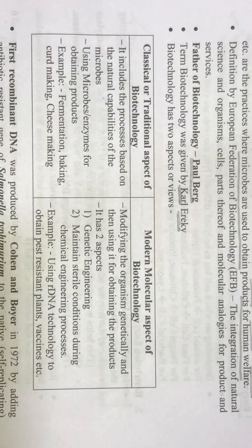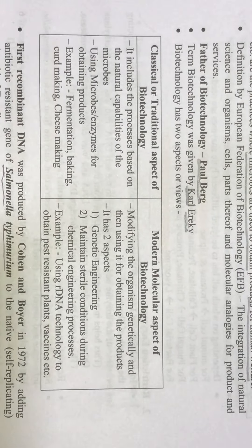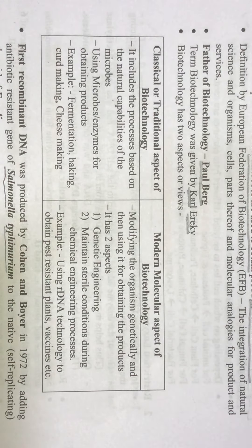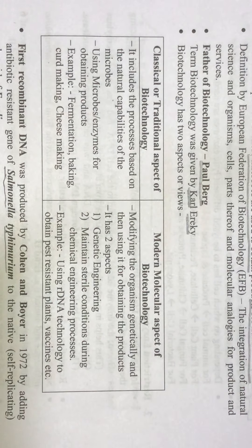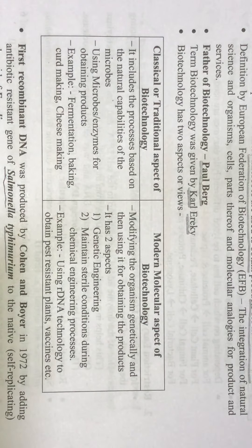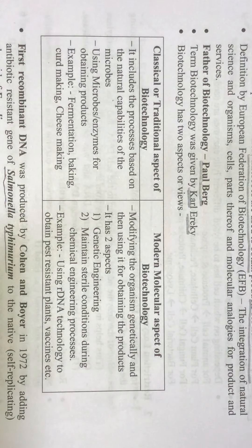Biotechnology has two aspects. One is the traditional or old concept, and the second is the modern or molecular aspect. In the traditional aspect, the process is based on the natural capability of microbes — what they do naturally, like breathing. We are not doing anything artificial. Using microbes or enzymes for obtaining products comes under the traditional aspect.